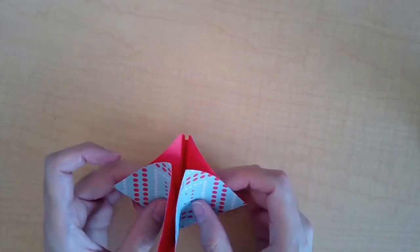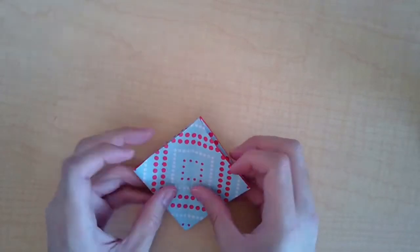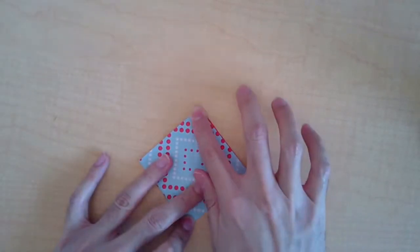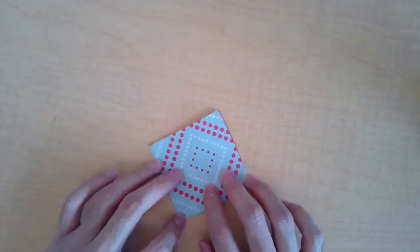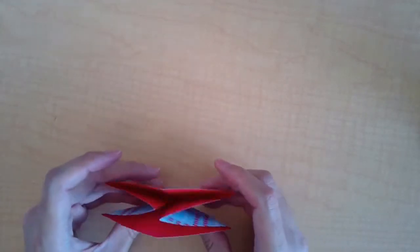And push it in to make a diamond or square. You're going to want to have the open side, the one here, facing you.